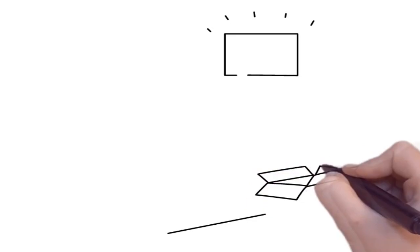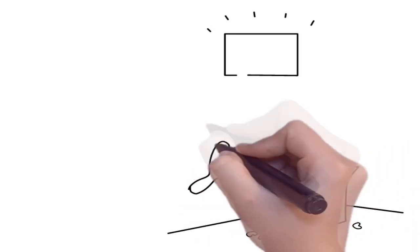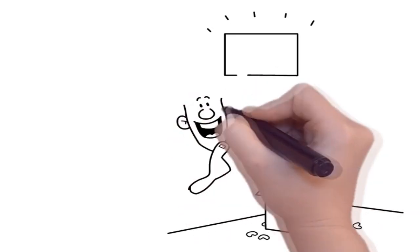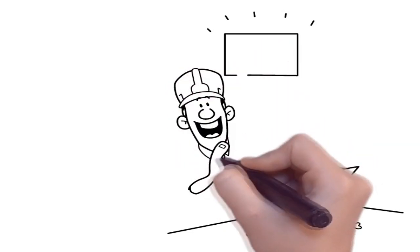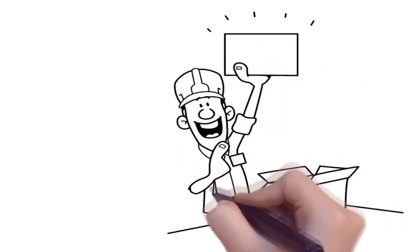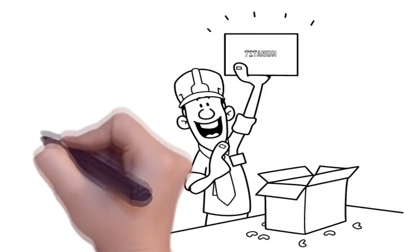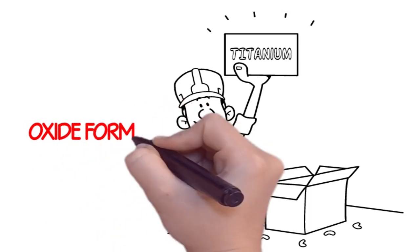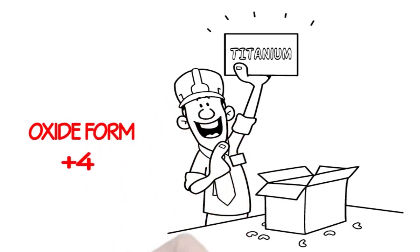Titanium appears to be a hard and shiny metal. As a member of group 4 in the periodic table, titanium is commonly found in an oxide form which is the oxidation state of plus 4.